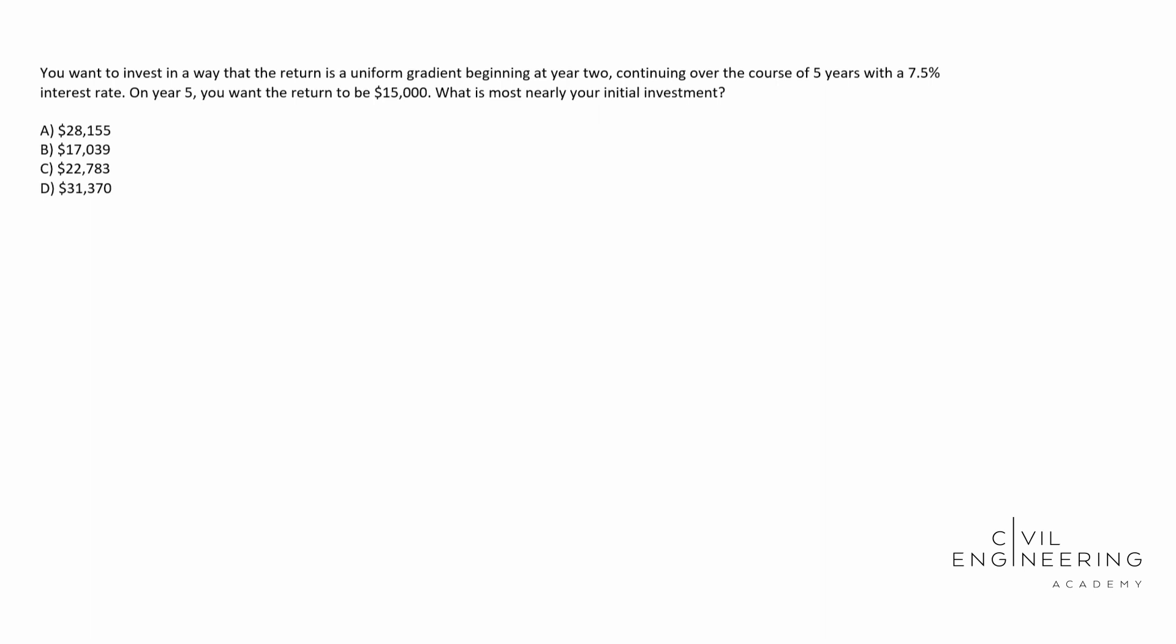So today we have an alternative analysis problem and in particular this is a present worth problem. So let's read the question. You want to invest in a way that the return is a uniform gradient beginning at year two, continuing over the course of five years with a 7.5% interest rate. On year five, you want the return to be $15,000. What is most nearly your initial investment?